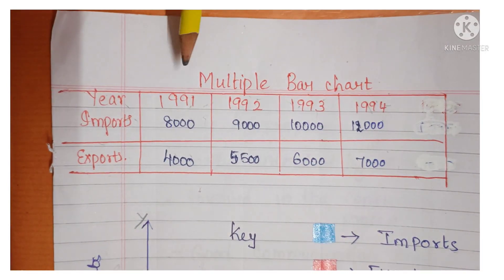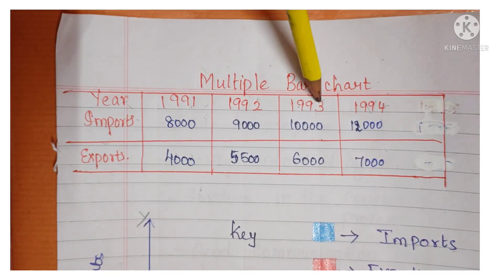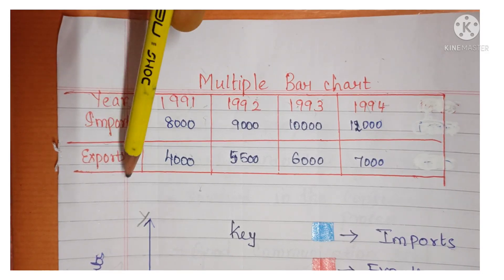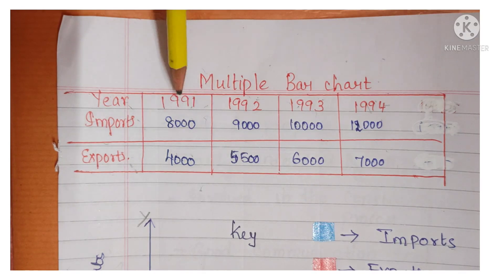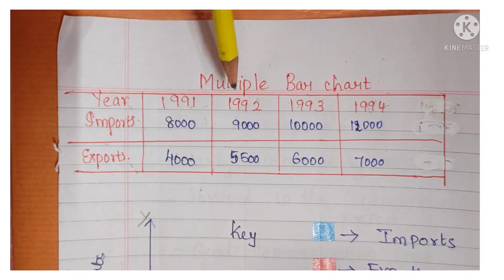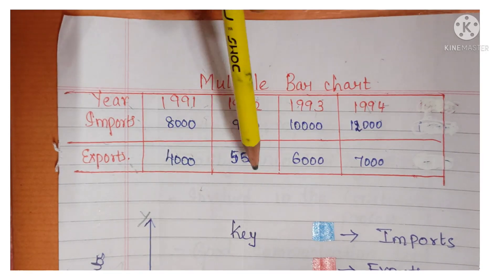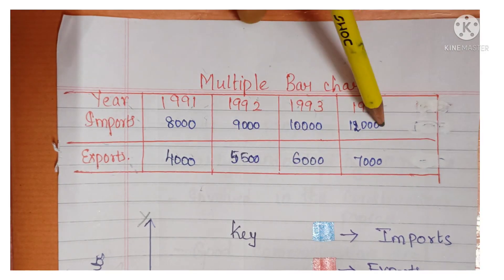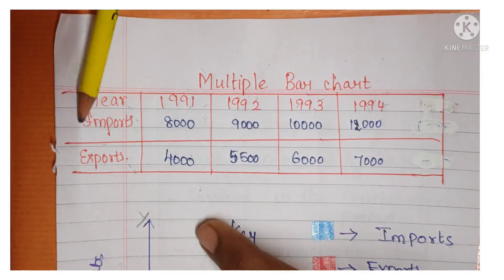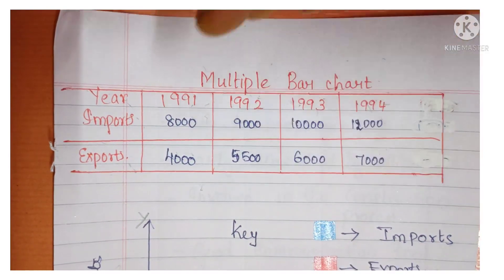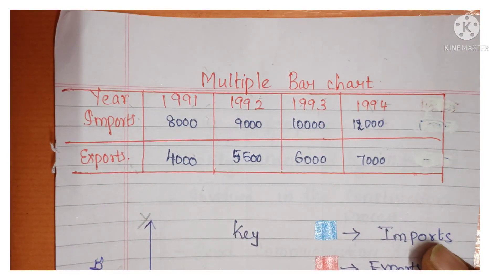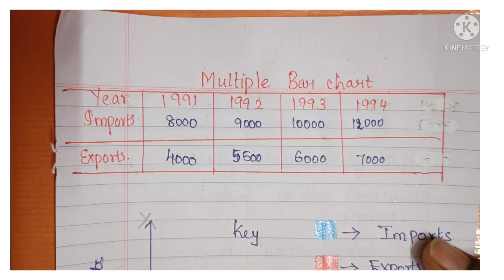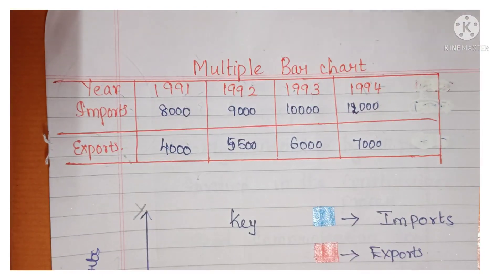Let's see an example. Year, imports, and exports: 1991 — import 8,000, export 4,000; 1992 — import 9,000, export 5,500; 1993 — import 10,000, export 6,000; 1994 — import 12,000, export 7,000. Here we are going to show more than one thing in the same chart. If it is only one thing, that is a simple bar chart; if it is two or more things, then it is a multiple bar chart.